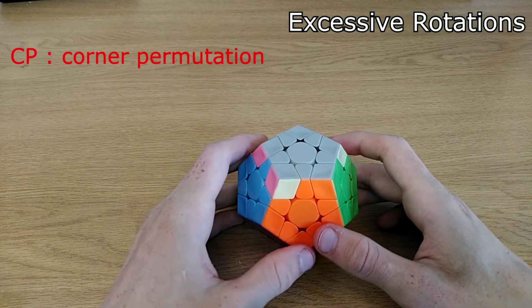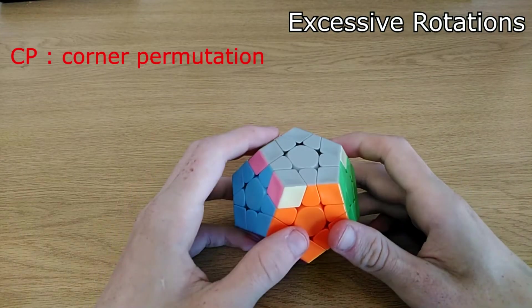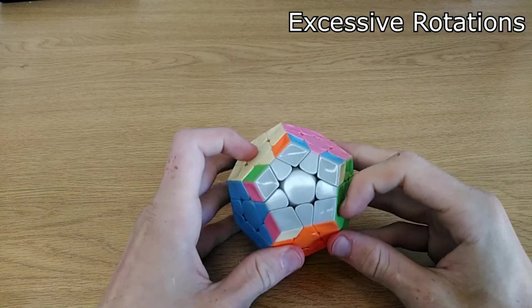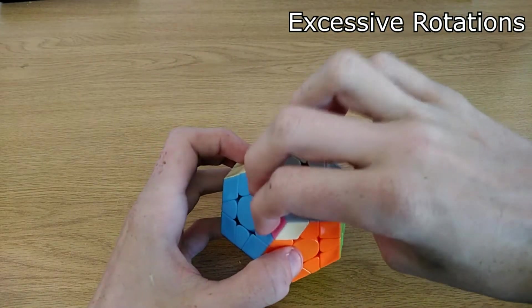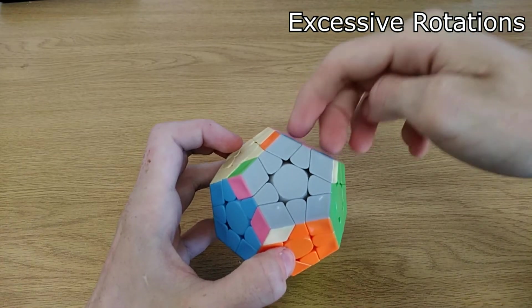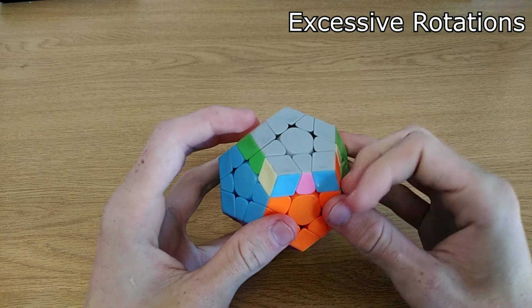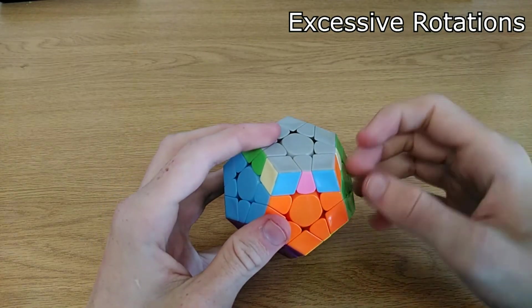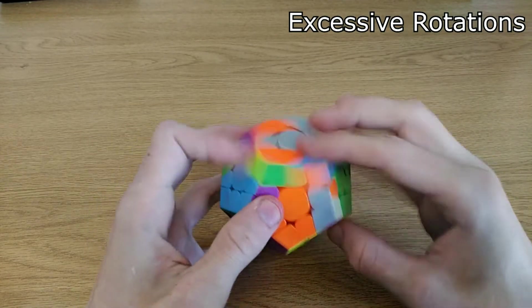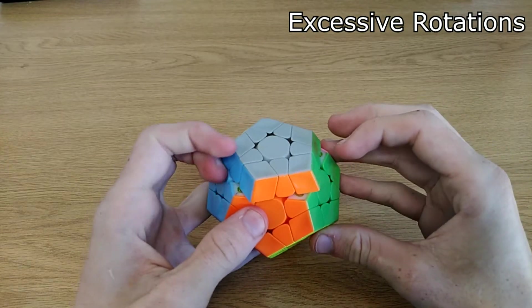Another way to reduce your rotations is to better learn your CP algorithms and to better recognize it. For instance, in this case, I know that these two headlights are here, so I know I'm going to have to do the algorithm from this side. So instead of rotating twice and then doing the algorithm, I can just do a U2, and then I know after I did the algorithm, I have to do a U2 prime to finish it off, like that.